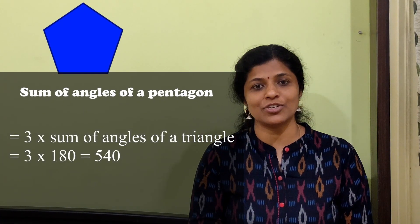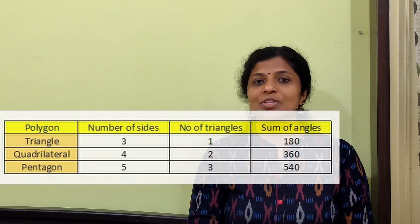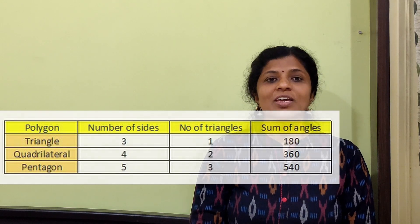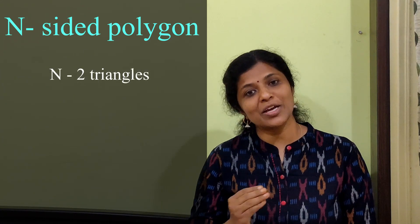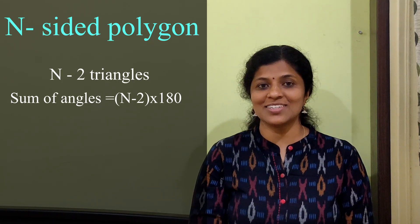If we add one more triangle to this shape, we get a five-sided figure, or a pentagon. The sum of interior angles of a pentagon is 3 × 180 = 540 degrees. Here we see a pattern: a four-sided quadrilateral contains 4 − 2 = 2 triangles, and a five-sided pentagon contains 5 − 2 = 3 triangles. So, if we have a polygon with n sides, it will have n − 2 triangles, and the sum of interior angles will be (n − 2) × 180 degrees.